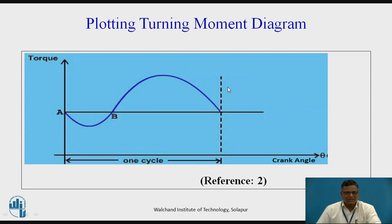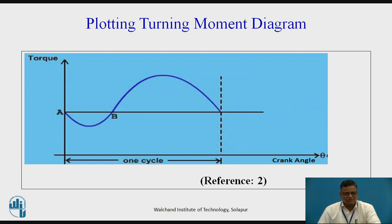Here is an example of a turning moment diagram. The x-axis represents the crank angle (various angular positions of the crank), denoted as theta in radians. The y-axis represents the torque or turning moment or crank effort. The blue colored curved line indicates the torque at various positions of the crank. For a given crank angle theta 1 or theta 2, you can read the corresponding torque vertically. This shows the variation of torque with reference to the crank angle.